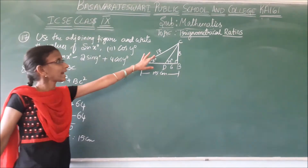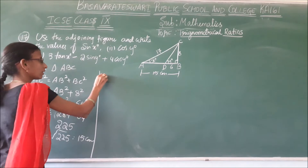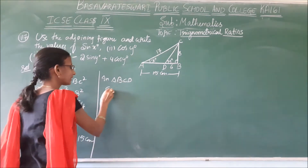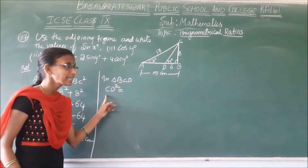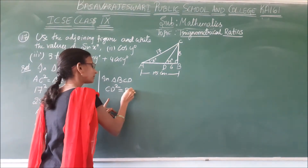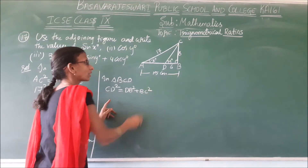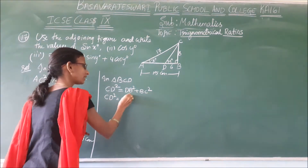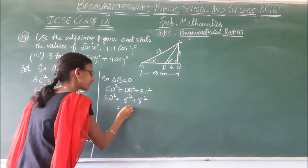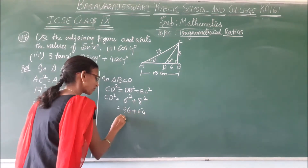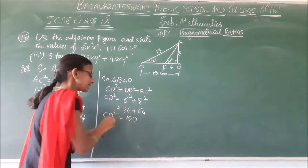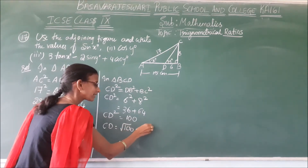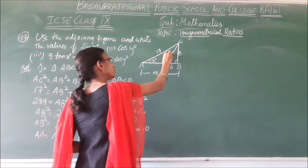Now in triangle BCD, CD squared equals BD squared plus BC squared according to Pythagoras theorem. So CD squared equals 6 squared plus 8 squared, which is 36 plus 64, equals 100. Therefore CD equals square root of 100, which is 10.